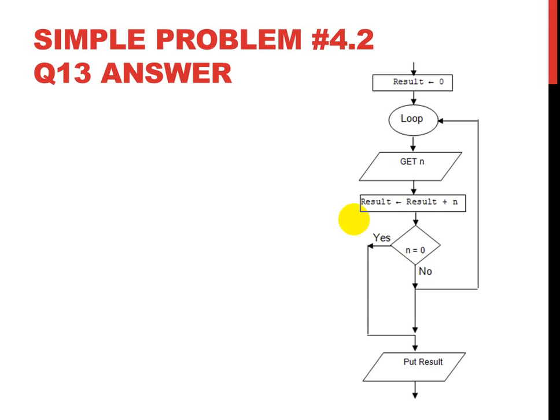For question 13 — the flowchart — you might be asked to fill or finish one off in the exam. They often leave the decisions empty. If N equals zero we output the result; if N is not equal to zero we keep looping: GET N, result = result + N, then check again. The get-out-of-jail card is when N equals zero. That covers algorithm to pseudocode to code — know this one thoroughly, as it's the basis from the textbook and will help you through exam questions.